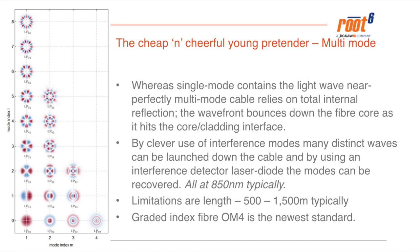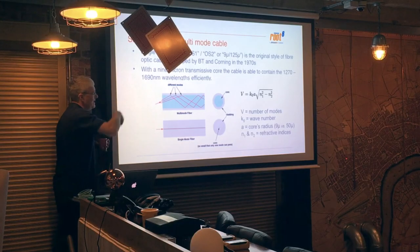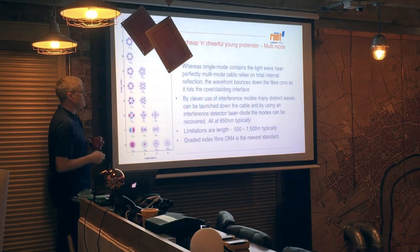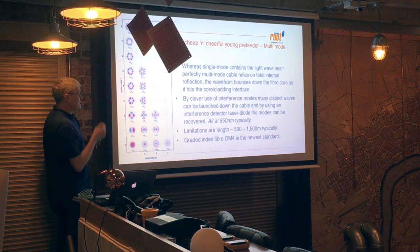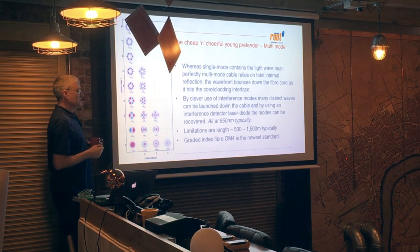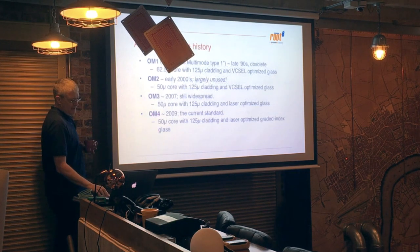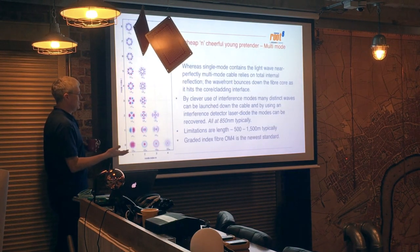In single-mode cable, the light wave is contained perfectly within the 9-micron core. In multimode cable, we rely on total internal reflection, where the modes of light bang into the interface between the transmissive core and the cladding and make their way down the cable — bouncy, bouncy, bouncy to the other end. The limitations are that even with the very best contemporary fibre standards, we're topping out at about 1,500 metres; earlier standards managed only about 500 metres.